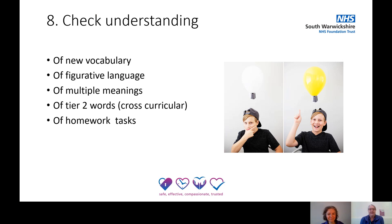Tip number eight: checking for understanding. Check they understand new vocabulary. We're not saying don't use figurative language or implied meaning — it's important the student is exposed to this — but make sure you explain it and check for understanding, both in the language you use in the classroom and the language they're exposed to in reading and writing. Highlight words and be aware that words can have multiple meanings, particularly subject-specific meanings — for example, the word 'solution' is generally thought of as the answer to a problem, but in chemistry it has quite a different meaning. Think about Tier 2 cross-curricular words such as analyse, explain, classify, justify, describe — don't assume the student understands what these mean.